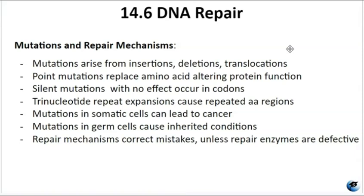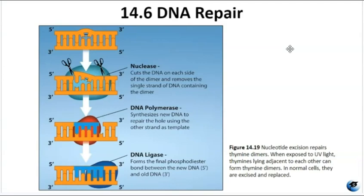Repair mechanisms exist to fix errors, but sometimes mistakes go uncorrected, and repair enzymes themselves can be defective or mutated. Figure 14.19 shows a mutation caused by exposure to UV light — thymines form dimers, which in a normal cell would be excised by nuclease and replaced by DNA polymerase. These repair mechanisms are carried out by nuclease, DNA polymerase, and ligase, which fills in the gap.